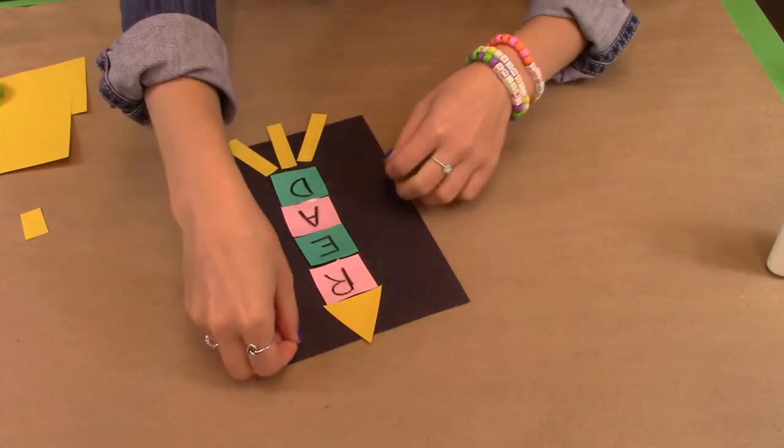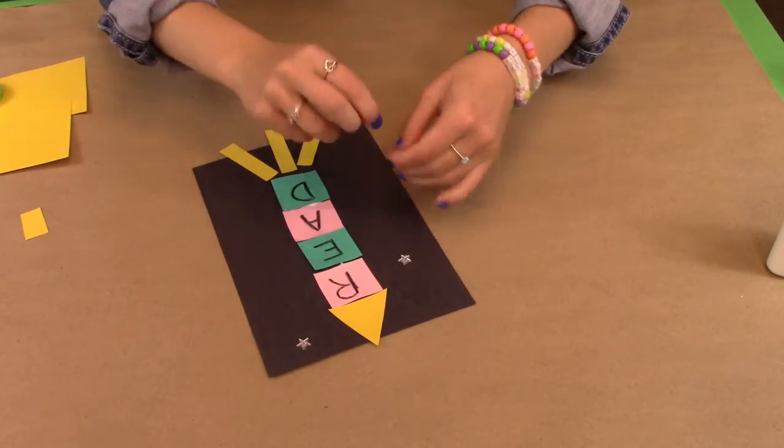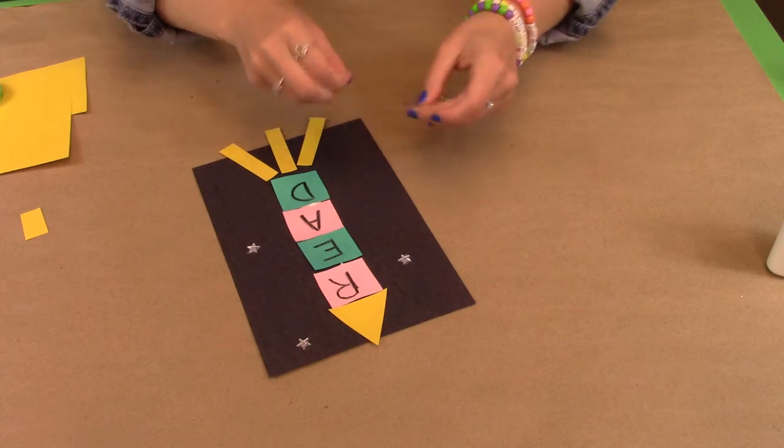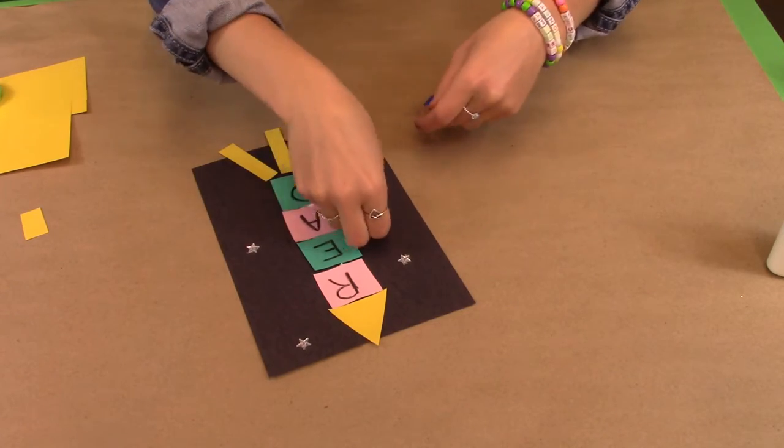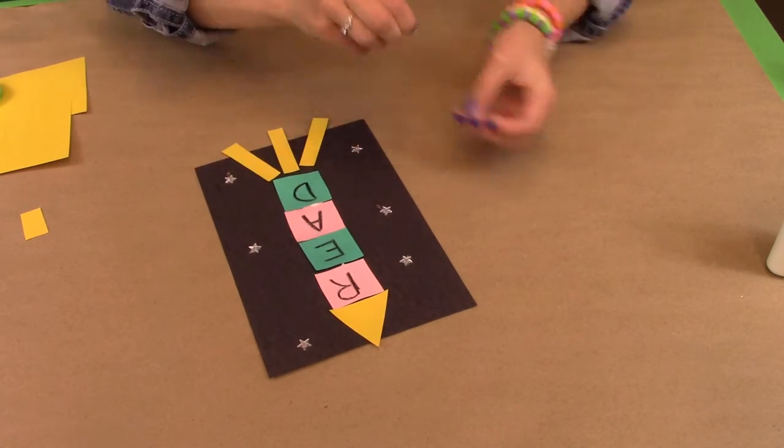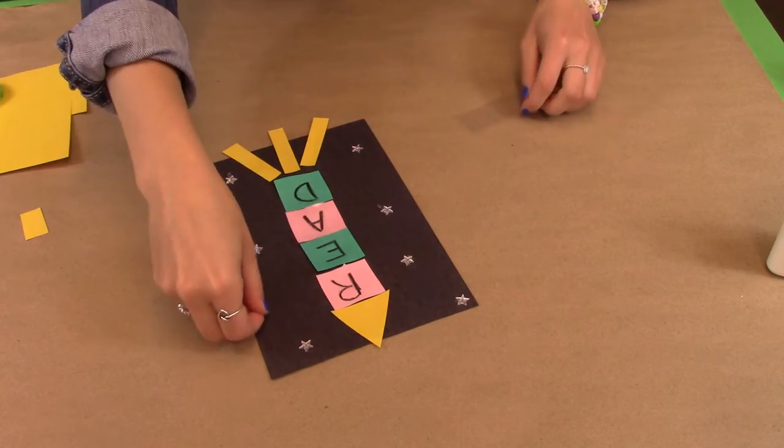Now you're going to use your extra leftover star stickers from the constellation craft and decorate the excess black paper like I'm doing here. You could choose to color on the paper to add anything you want to just make it shine.